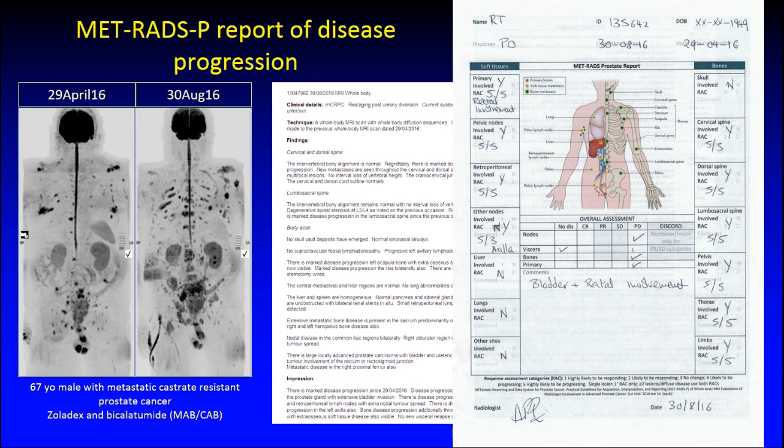The overall response categories shown to the clinician cover nodes, visceral, bones, and the primary tumor. Options are: no disease, complete response, partial response, stable disease, and progression. You tick the appropriate category and can write a note — for example, noting bladder and rectal involvement. This is a typical MET-RADS report for progressing prostate cancer.